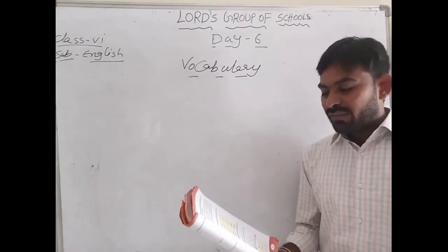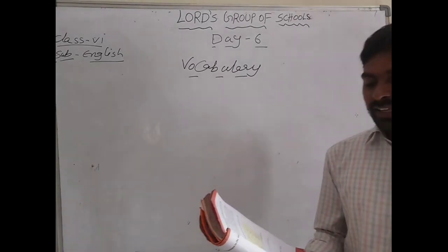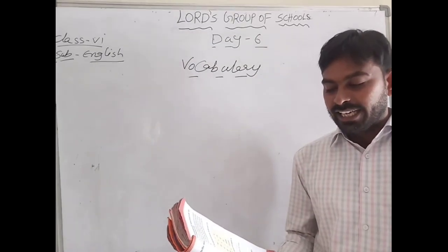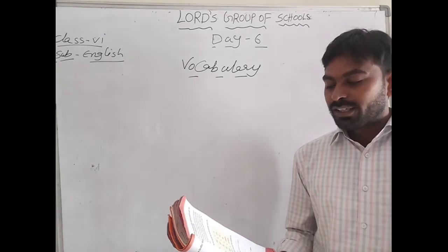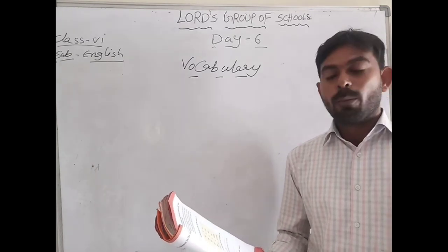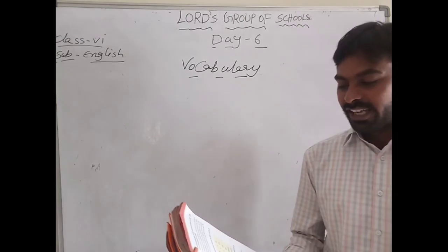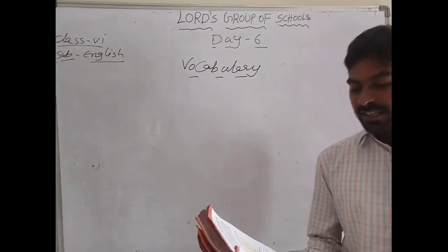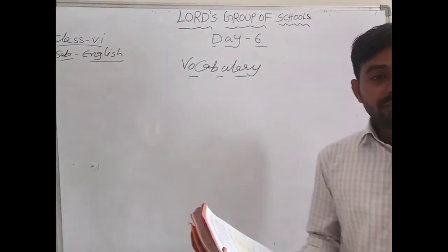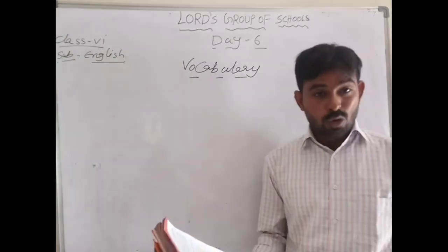So the antonym pairs are: dark–light, happy–unhappy, large–small, leave–die, long–short, near–far, open–close, start–stop, thick–thin, appear–disappear, common–uncommon, leave–die, come–go. These are the opposite words which we are seeing.